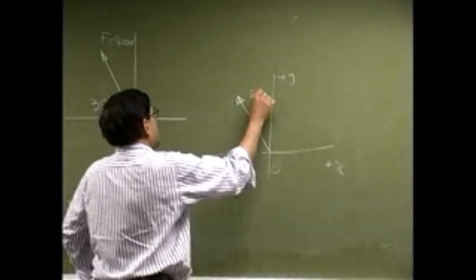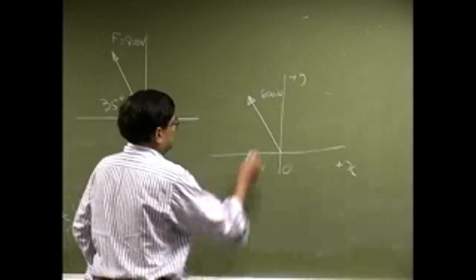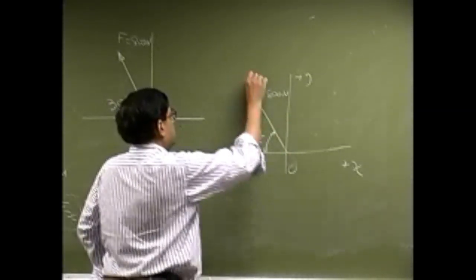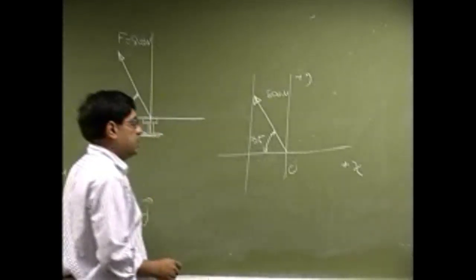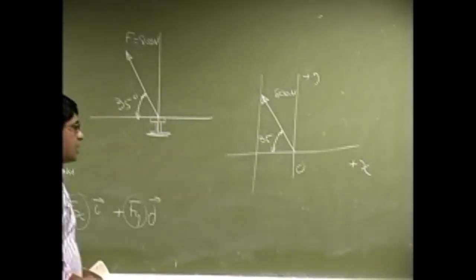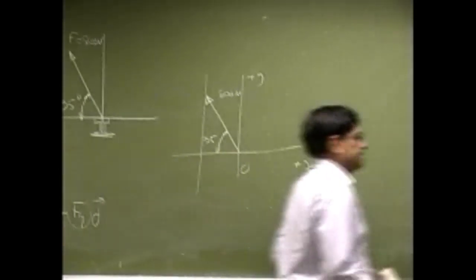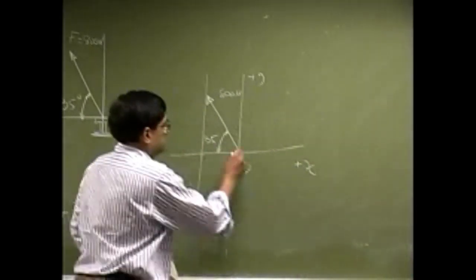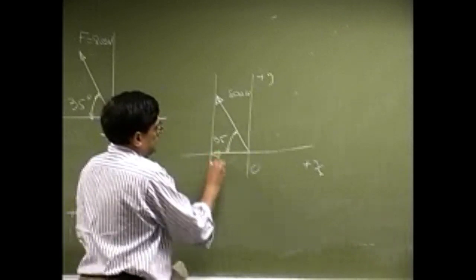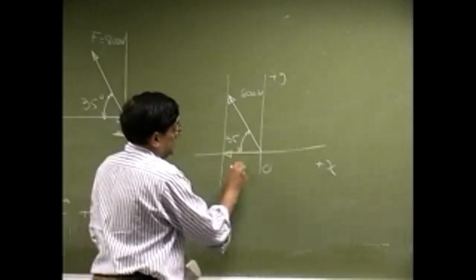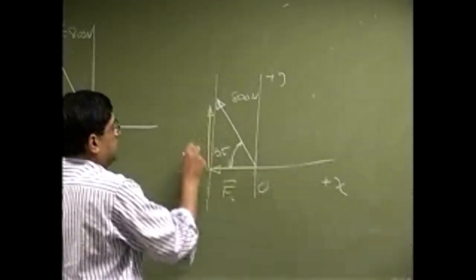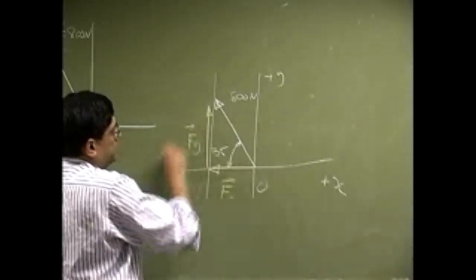We got the force as 800 Newton and this angle being 35. We draw the line at the point and this is going to become the X component and this other is going to represent the Y component.